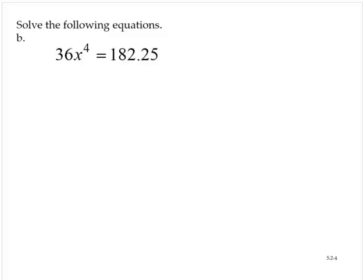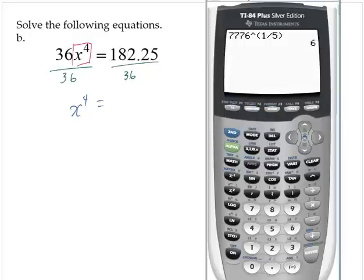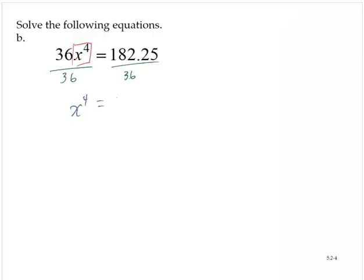All right. In example B, we were asked to solve 36x to the fourth is equal to 182.25. I'm going to isolate the x to the fourth. So to do that, I'll divide through both sides of the equation by 36. And so that would give me then x to the fourth is equal to, let's see, 182.25 divide that by 36, 5.0625.